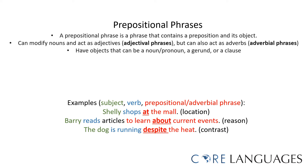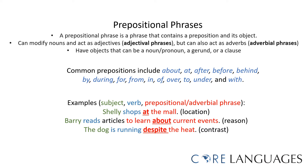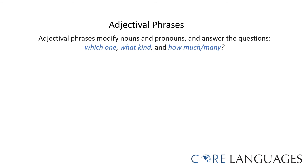The dog is running despite the heat. The preposition is 'despite,' and the phrase 'despite the heat' indicates contrast — the dog is running even though it is very hot. Prepositional phrases can be used to modify nouns and pronouns, and they can answer the questions: which one, what kind, and how much or how many. They are referred to as adjectival phrases.